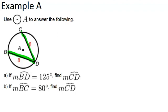Example A says: use circle A to answer the following. In part A, if the measure of arc BD equals 125 degrees, find the measure of arc CD. So if BD right here is 125, what is the measure of arc CD? What you need to notice is that each chord is length 8, and that means the two chords are congruent, which means that the arcs they intercept also have to be the same measure. So if arc BD is 125, then arc CD also has to equal 125 degrees.